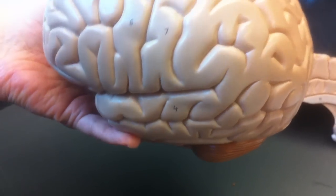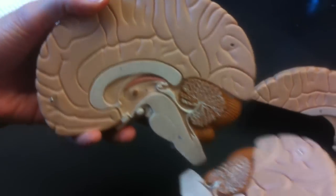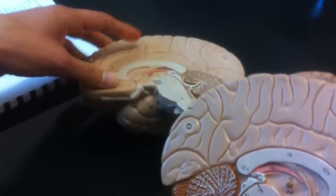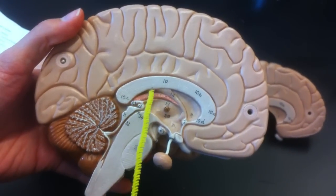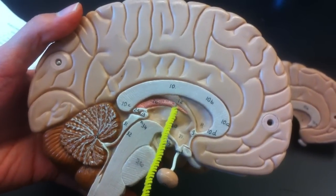White matter, which contains the corpus callosum and the fornix. Number ten is corpus callosum. Fornix is number twelve.